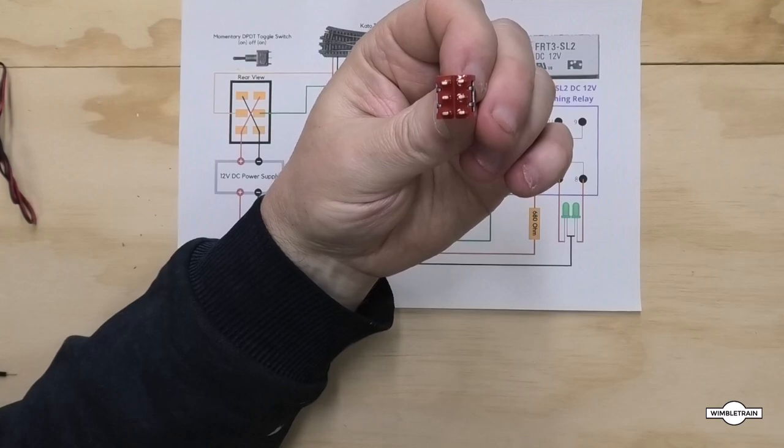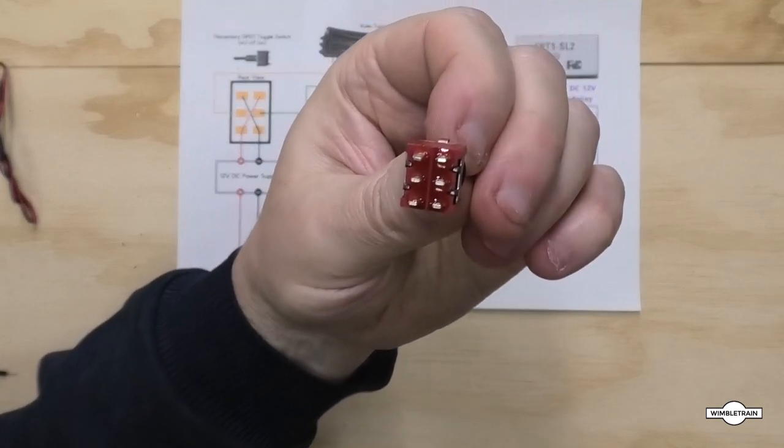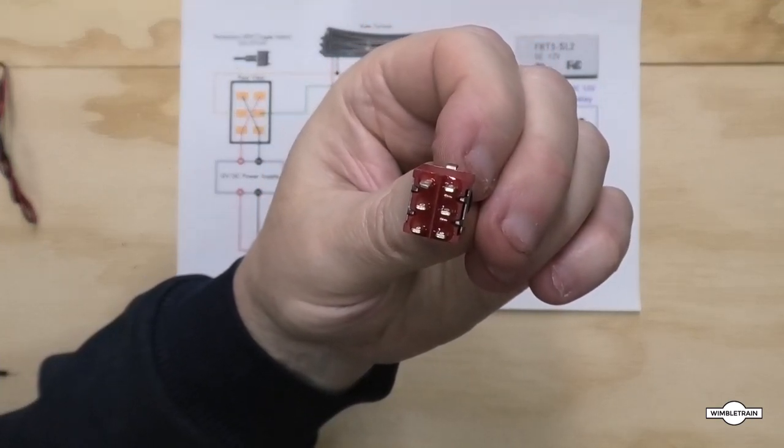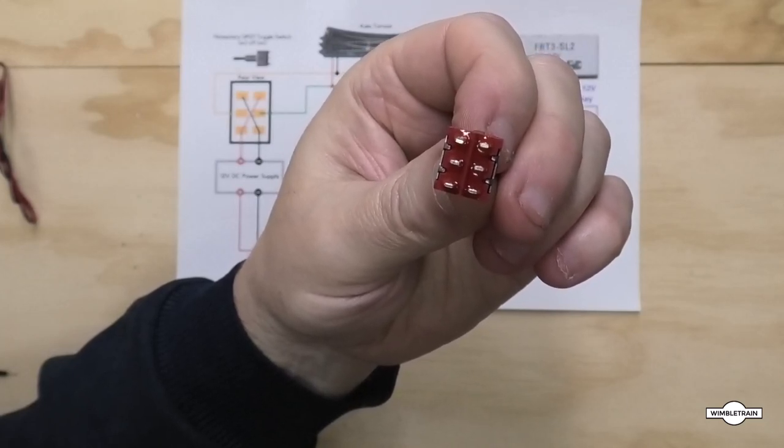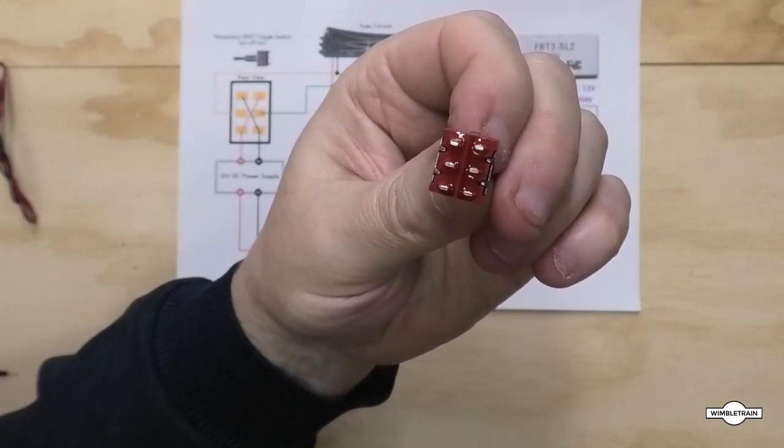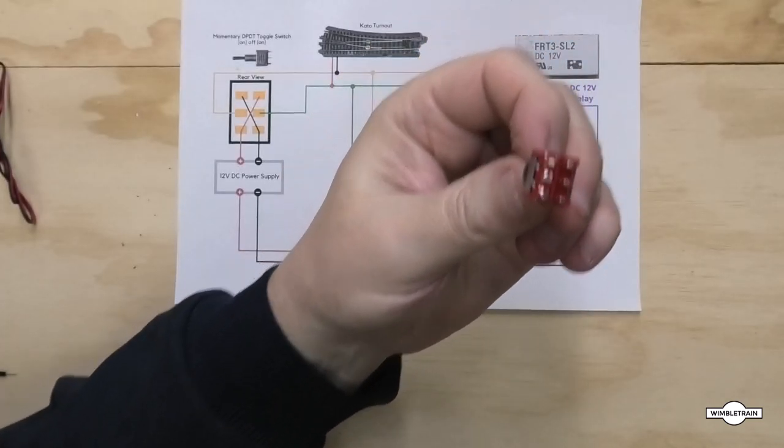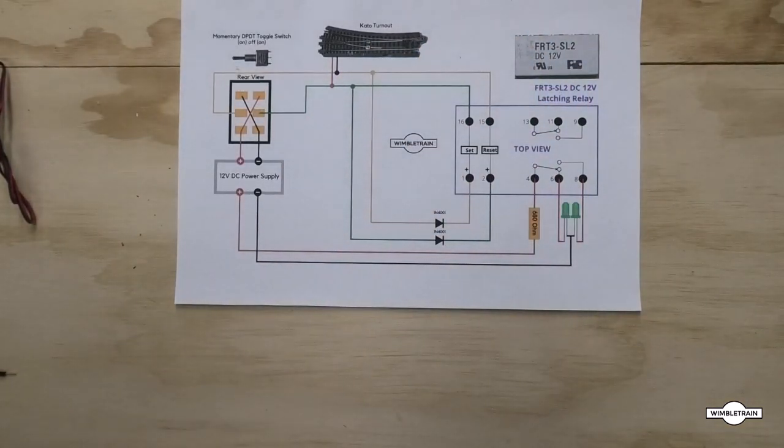So the first thing we need to do is wire up our toggle switch as per the diagram. So we have wires running from each corner to the other opposite corner, and then we have the power supply connected to one end of those connections, and then our Kato switch and a latching relay to the middle two pins. Now I'll just wire that up and I'll come back and show you what that looks like.